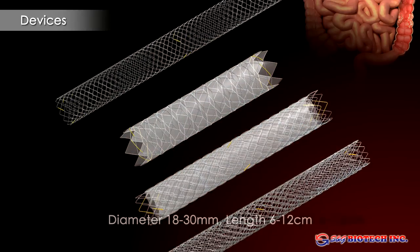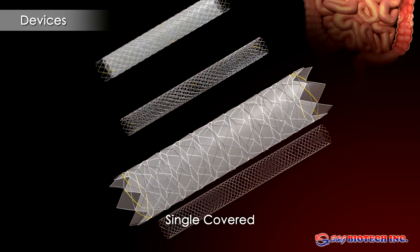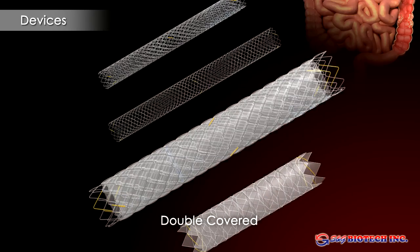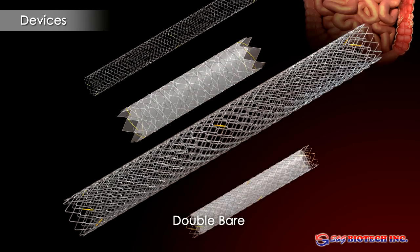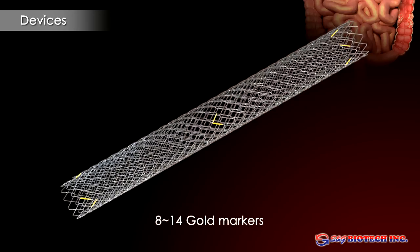There are four types of Aegis colorectal stents. The most popular stent is the double bare Aegis because of its excellent conformability and resistance to migration. Tubular gold markers on the stent increase radio opacity and visibility on fluoroscopy.